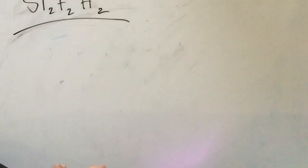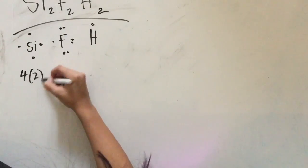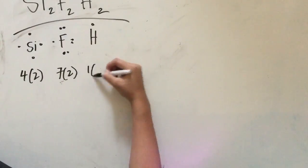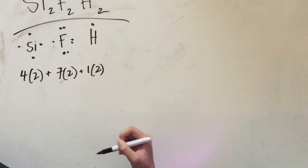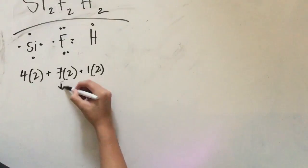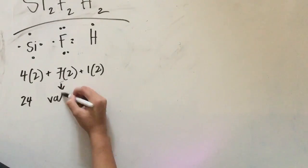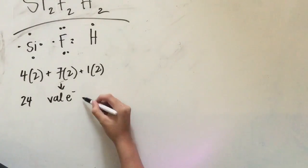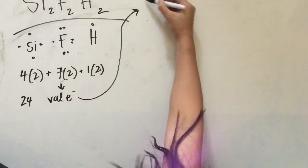Silicon 2, Fluorine 2, Hydrogen 2. Firstly, we're going to calculate the total amount of valence electrons in this molecule. There are 8 from the 2 silicons, 14 from the 2 fluorines, and 2 from the hydrogens, all equaling 24 valence electrons in this whole molecule.